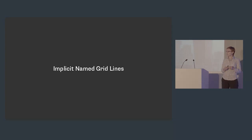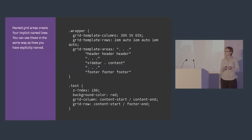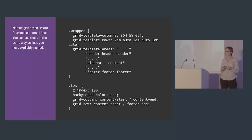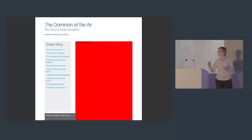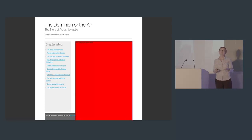Something else that happens when we use named areas is we get implicit named grid lines, which we can also use for line-based positioning. We've got a named grid area called 'content', so grid creates for us 'content-start' and 'content-end' for both rows and columns. I can position an area to start on 'content-start', end on 'content-end', and span from the implicit row line 'content-start' before the content area to 'footer-end'. This also shows that you can layer items on the grid — I gave that test area a higher z-index so it sat on top of other items — something you couldn't really do with tables.